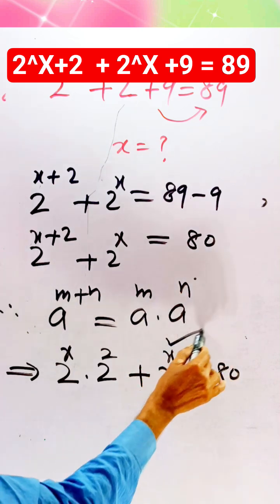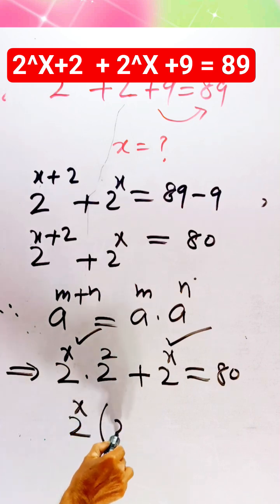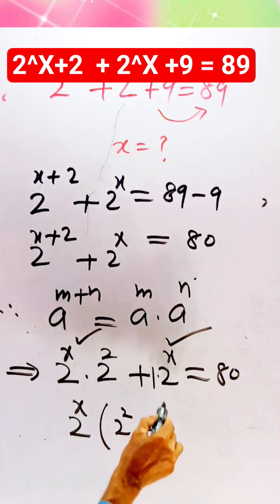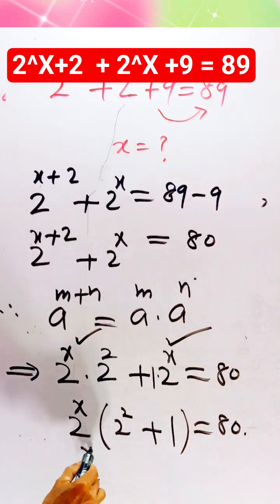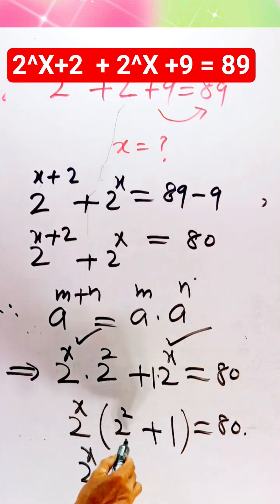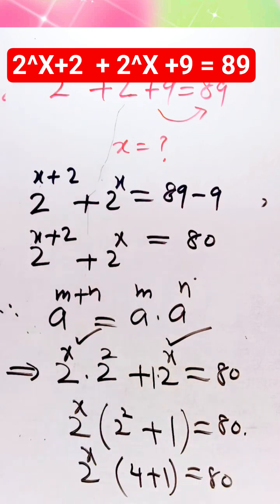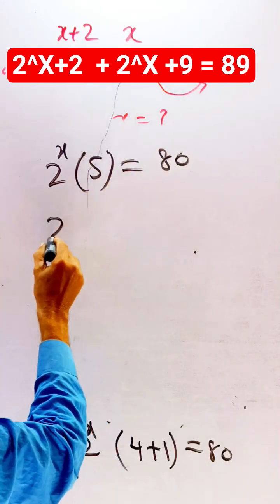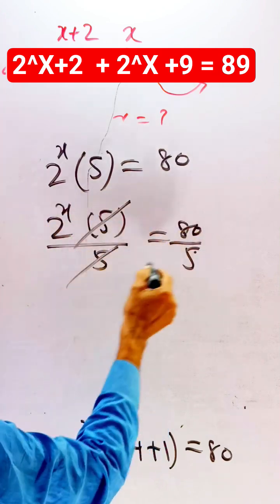We factor out the common term 2^x. This gives 2^x times (2^2 plus 1) equals 80. Since 2^2 is 4, we have 2^x times (4 plus 1) equals 80, so 2^x times 5 equals 80.